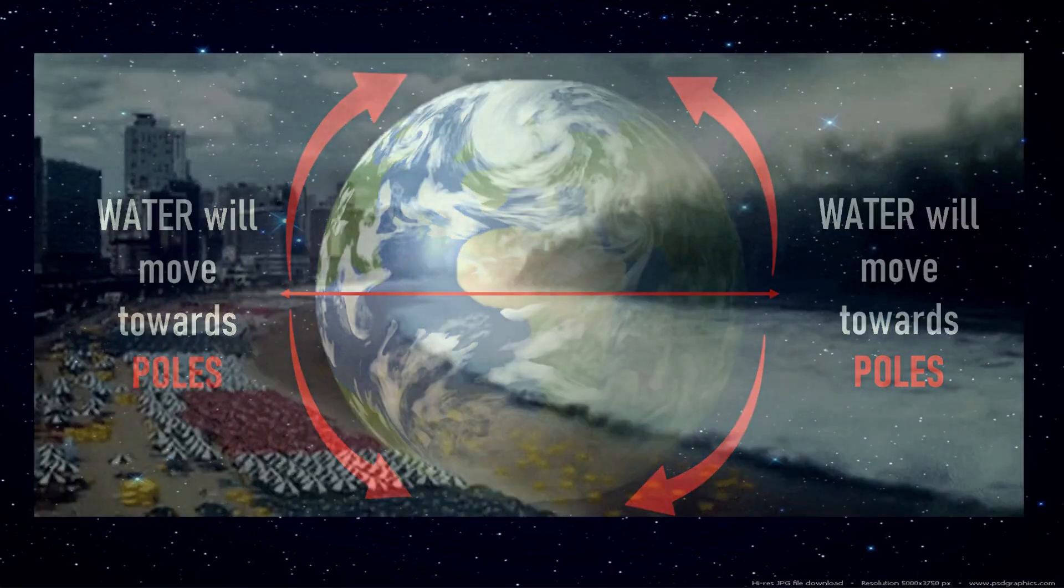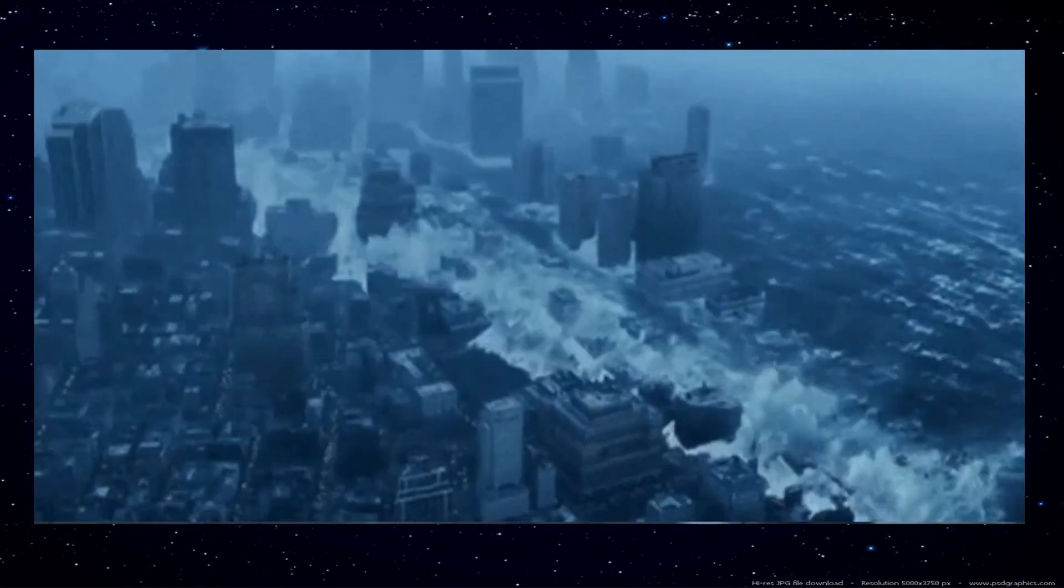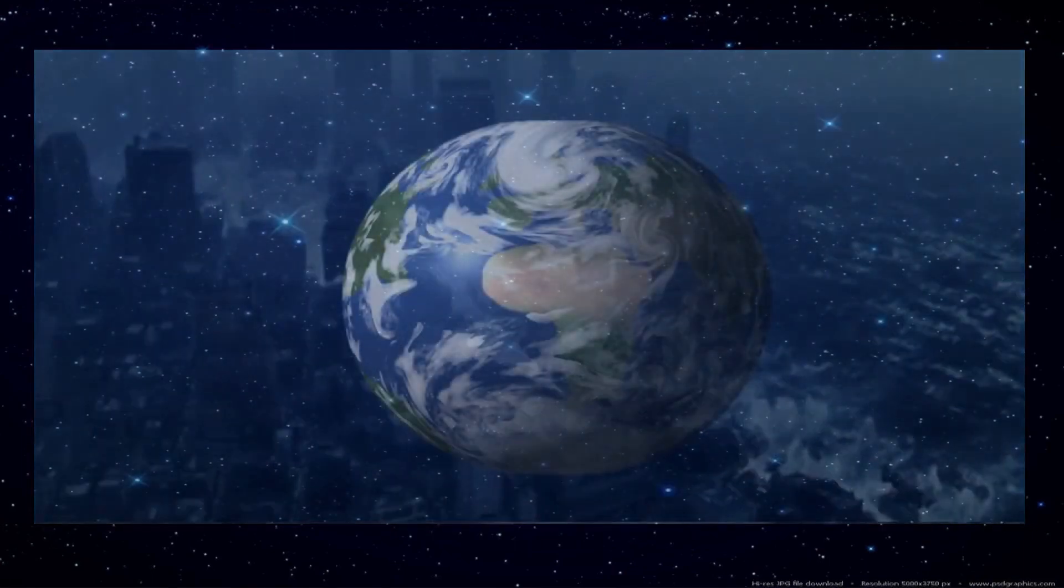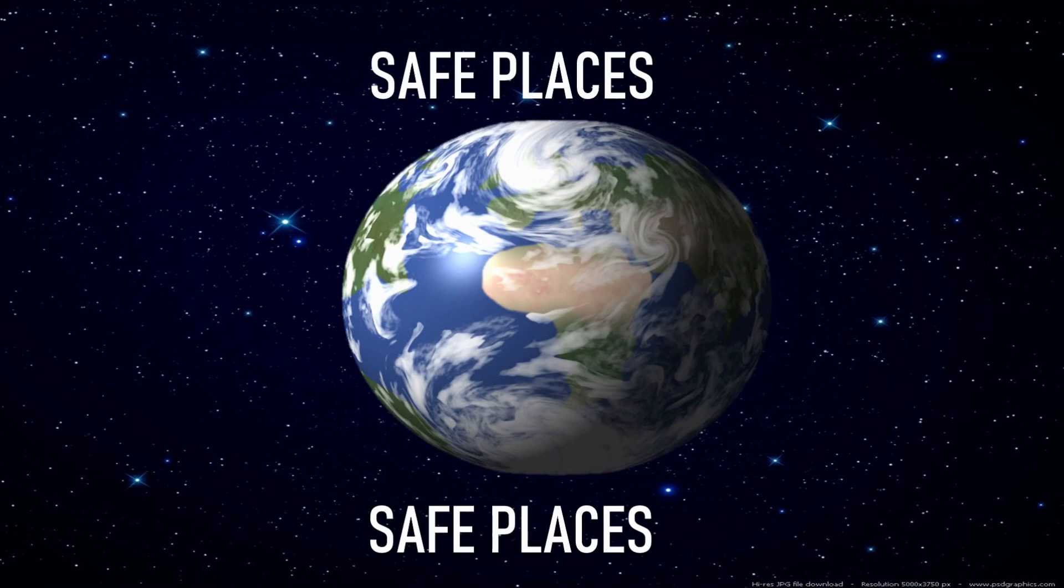Five seconds later, when the planet returned to its full speed rotation, the water would backtrack, and that's a heck of a storm. Maybe the only place you would be safe in this scenario is near the North or South poles, where the wind would be the mildest.